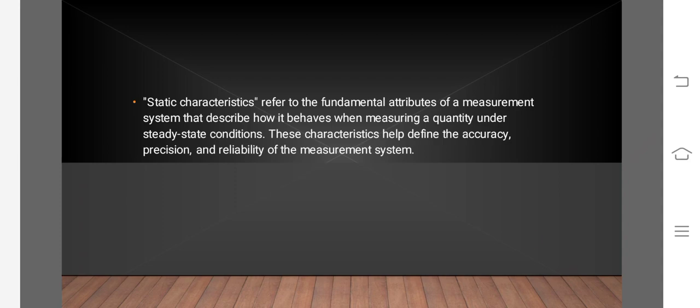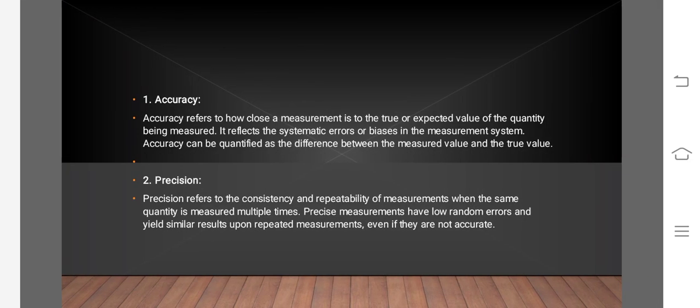These characteristics help define the accuracy, precision, and reliability of the measurement system. Accuracy refers to how close a measurement is to the true or expected value of the quantity being measured. It reflects the systematic error or biases in the measurement system. Accuracy can be quantified as the difference between the measured value and the true value.